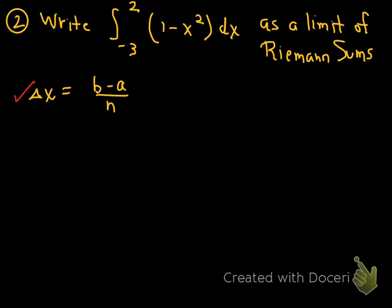b minus a over n. Be a little careful with the negative sign here. This is going to be 2 minus negative 3 over n. 2 minus negative 3, of course, is 5. Subtracting the negative gives me 5. Okay. I've got delta x.